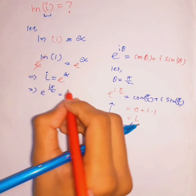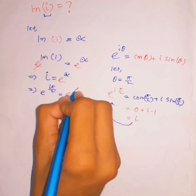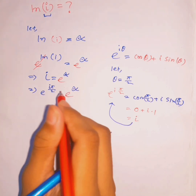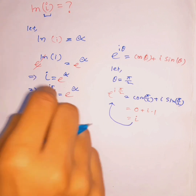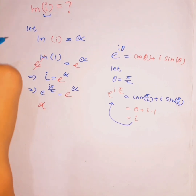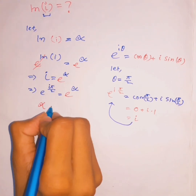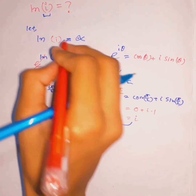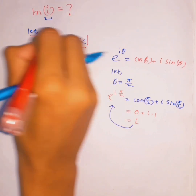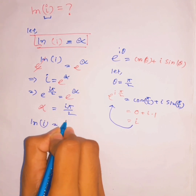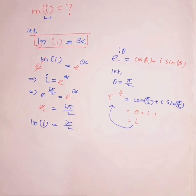So we have e^(iπ/2) equals e^(fish). On both sides e is the base, so the exponents must be equal. Therefore fish equals iπ/2. And since fish is ln(i), we get ln(i) equals iπ/2.